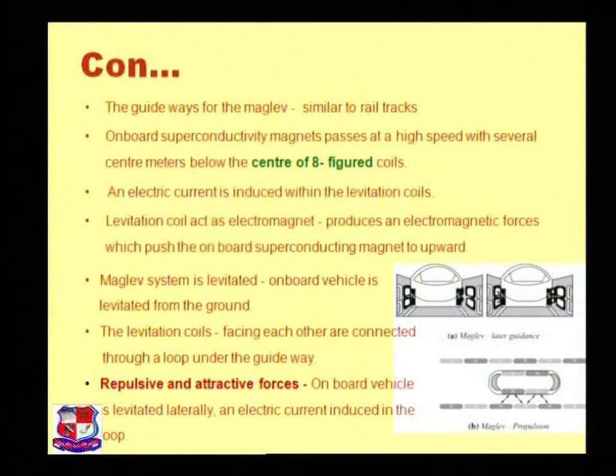The levitation coils facing each other are connected through a loop under the guideway. The repulsive and attractive forces, both types of forces on the onboard vehicle, levitate it laterally and an electric current is induced in the loop.